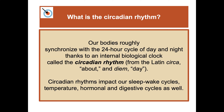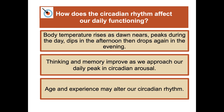What is the circadian rhythm? Our bodies roughly synchronize with the 24-hour cycle of day and night thanks to an internal biological clock called the circadian rhythm. This circadian rhythm impacts our sleep-wake cycles, temperature, hormonal, and digestive cycles as well. Body temperature rises as dawn nears, peaks during the day, dips in the afternoon, and then drops again in the evening.